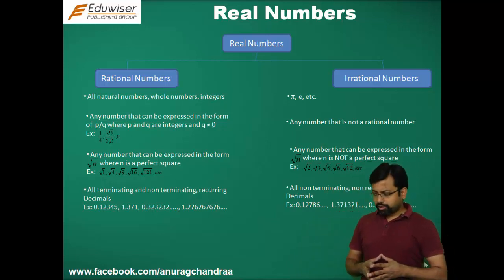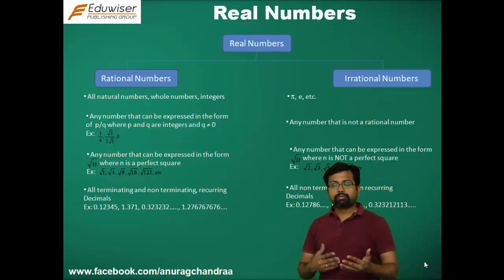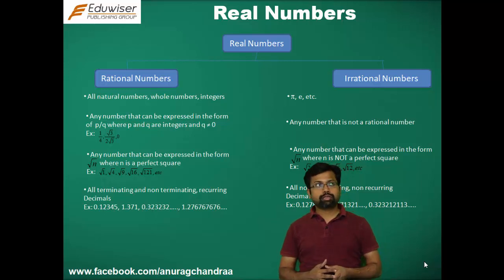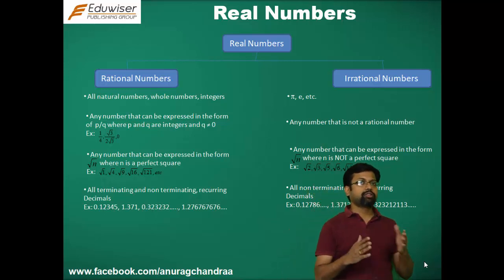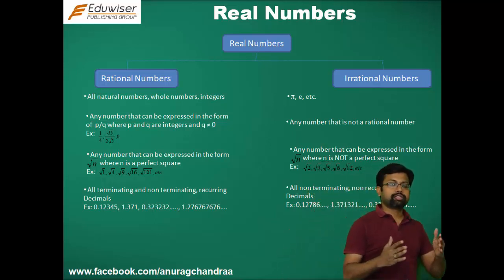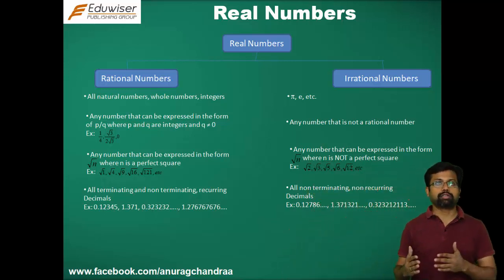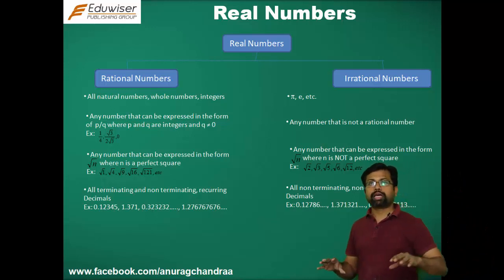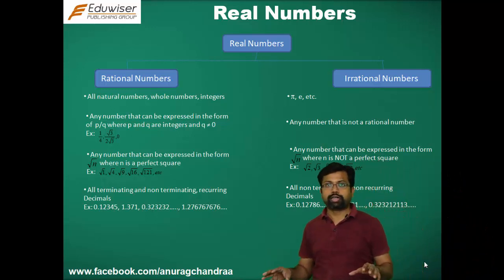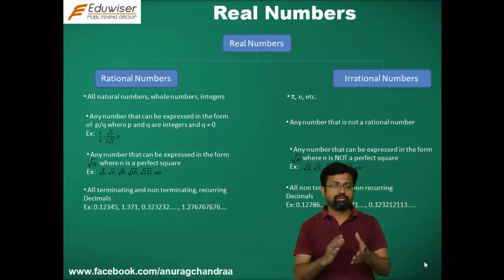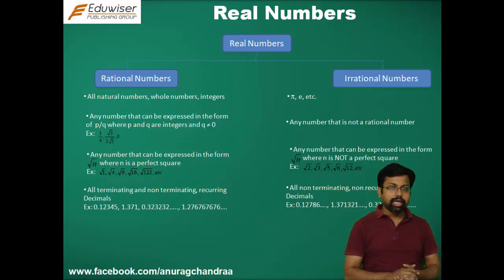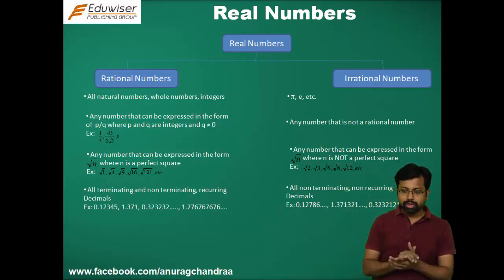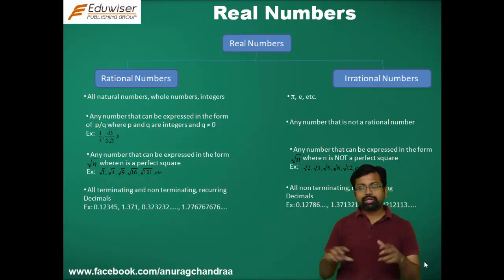Now let's take a look at what real numbers are. Real numbers are basically classified into two halves: rational numbers and irrational numbers. So any real number can either be rational or irrational. This is what you have learned in class 9th as well, so it's going to be kind of a recap here.